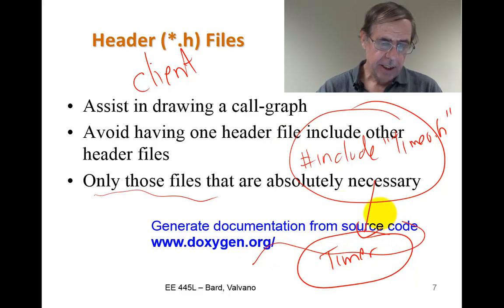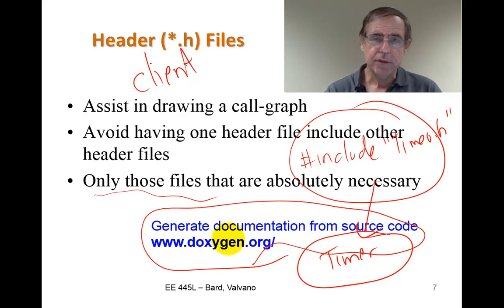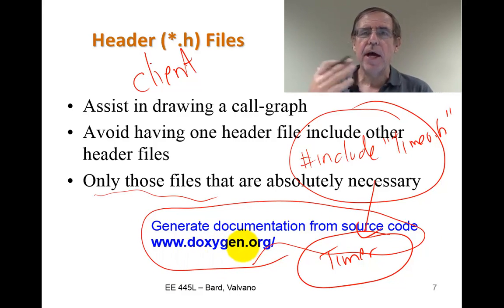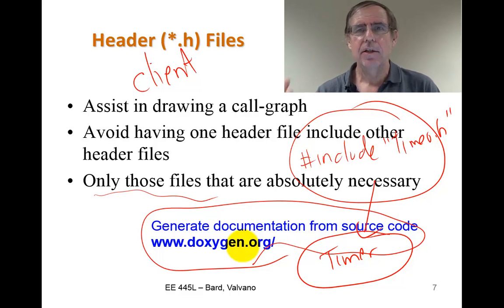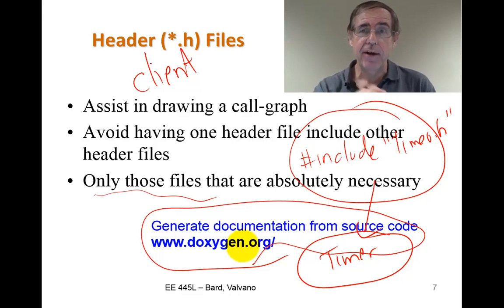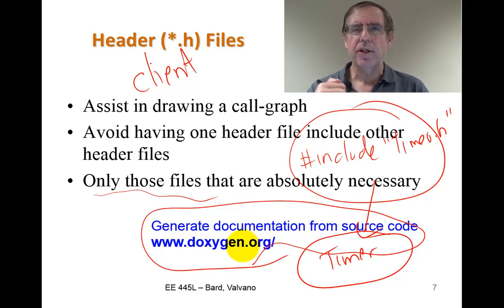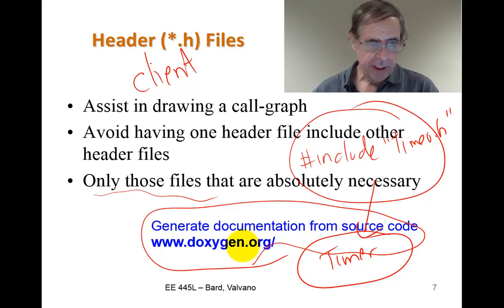There are some automatic call graph generators, like Doxygen. Doxygen is an automatic parser of the source code that looks at the header files, the C files, and the comments, and extracts what it does, how it's connected, and what module is connected to what other module. These are all very good mechanisms to help you automatically document how your modules are connected together.